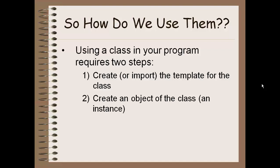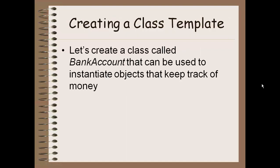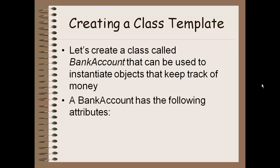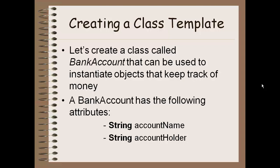Today we're focusing on creating the template for a class. We're going to make a class called BankAccount that can be used to instantiate objects that keep track of the amount of money I have. We're going to have a few attributes: a String attribute for the name of the account itself — like my vacation account, savings account, or checking account — an account holder, which is also a String, indicating who owns this bank account, and then a balance, which has to be a double because it's a decimal number — dollars and cents.